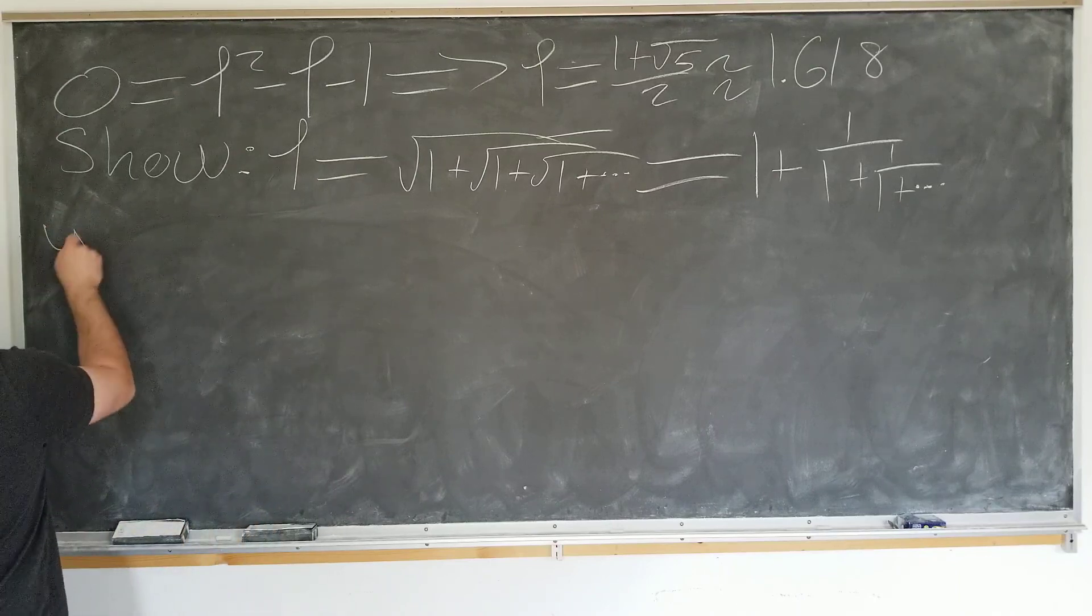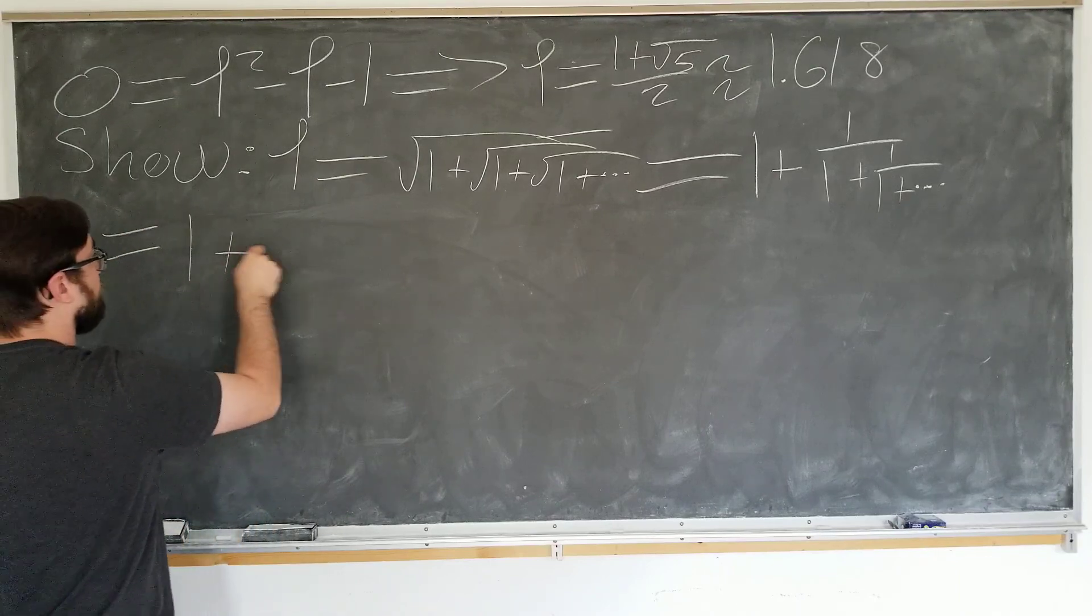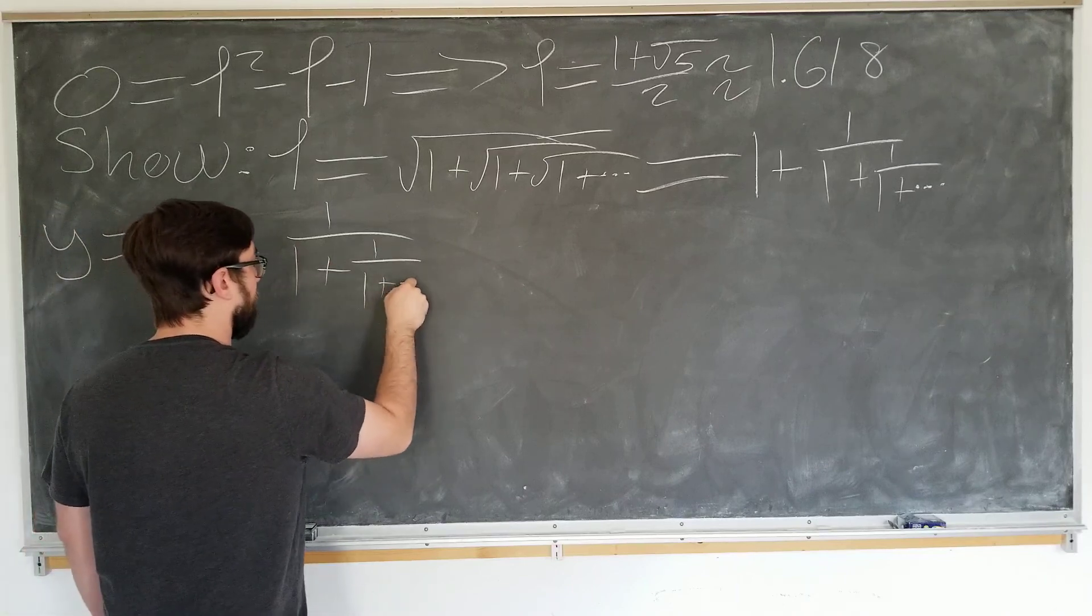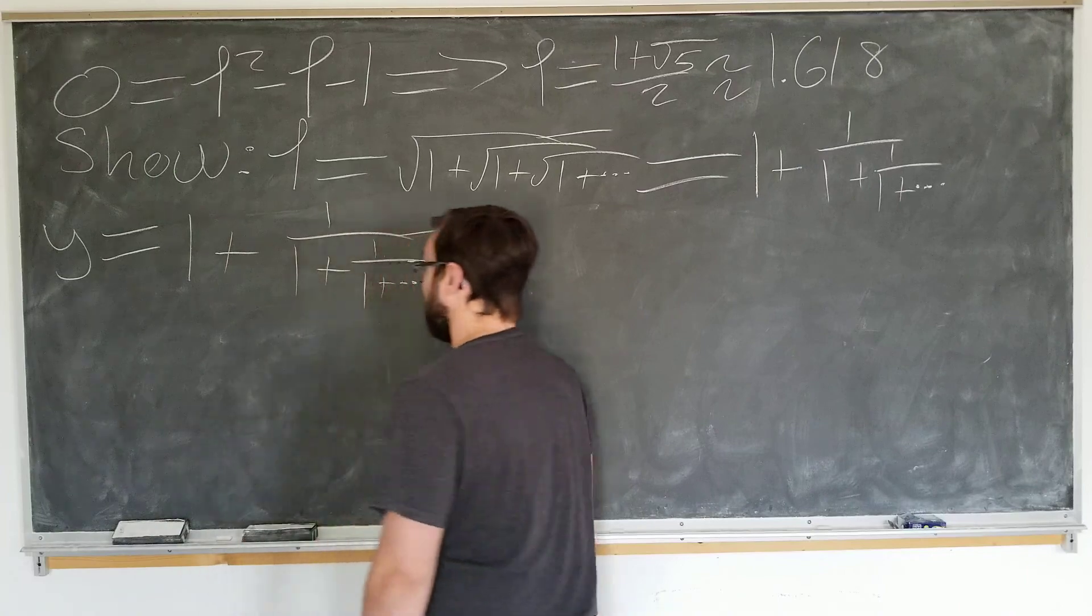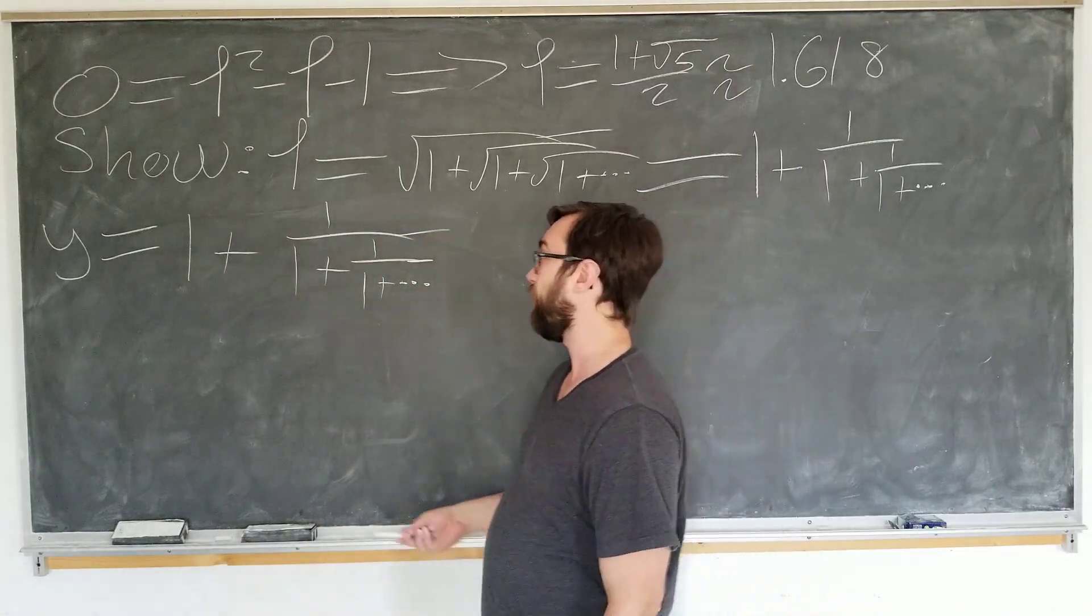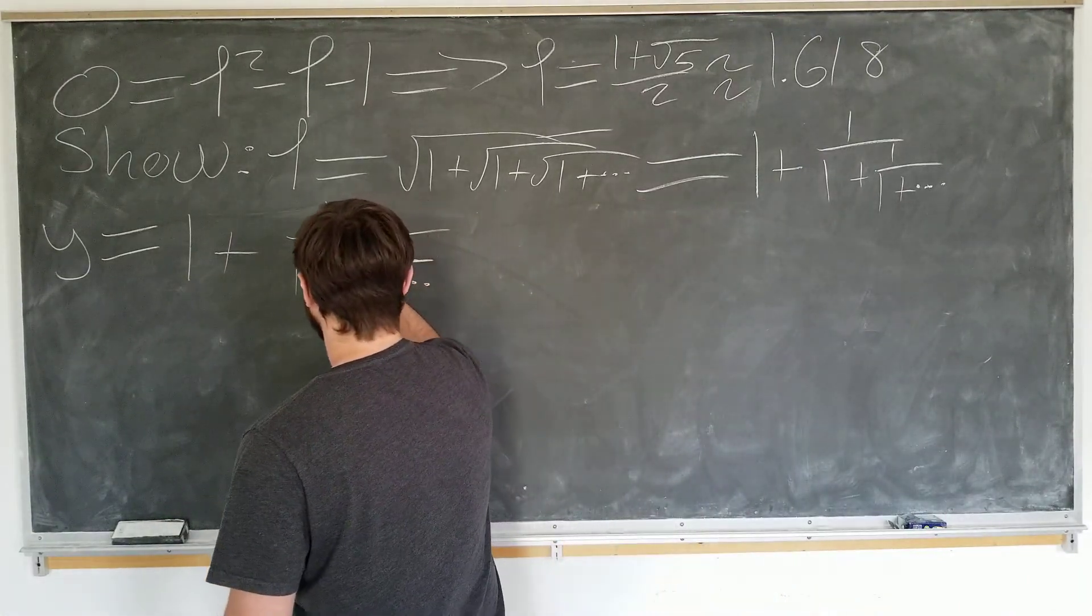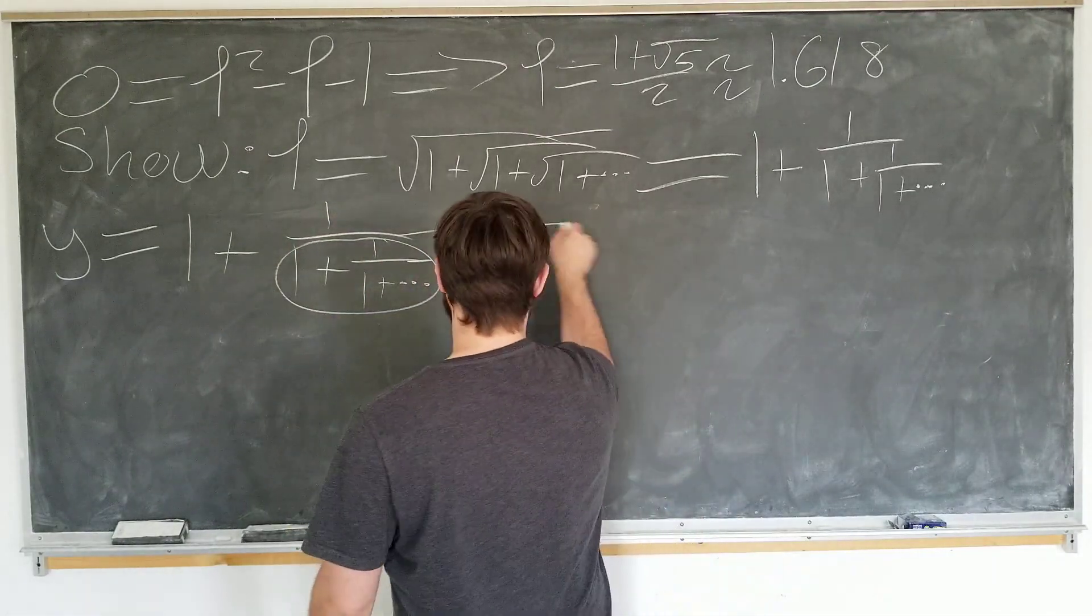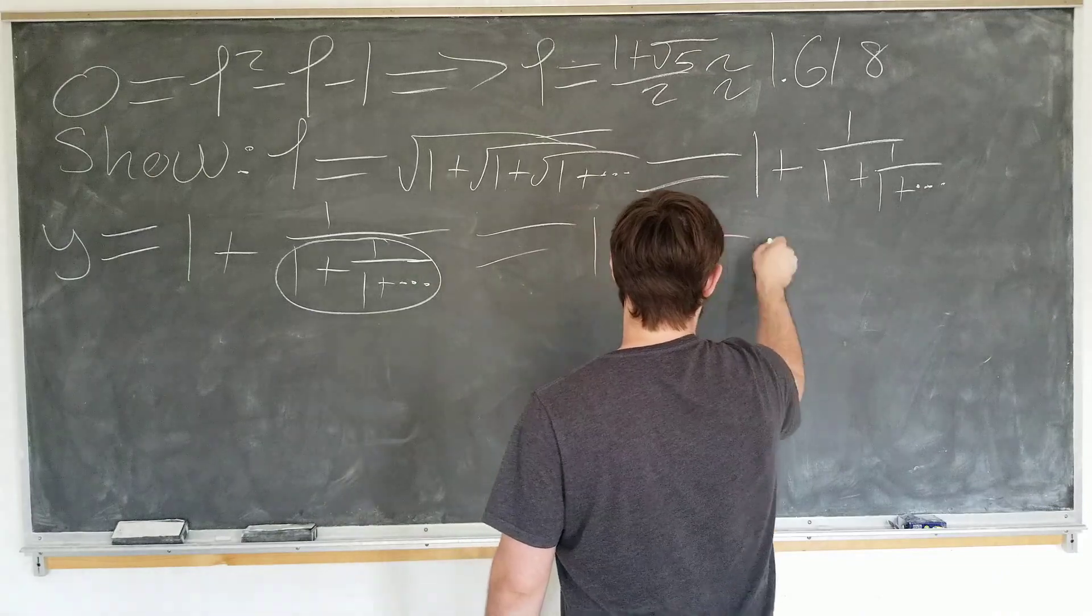Alright, let's let y be this thing since we don't know beforehand that it's going to be the same thing, of course. I'm not going to call it x again. Okay, how can we use the nesting property here? Well, this is the same thing as we want. So, it's equal to 1 plus 1 over y.